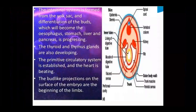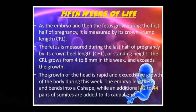Bud-like projections appear on the surface of the embryo, which will eventually develop into the limbs — both arms and legs.